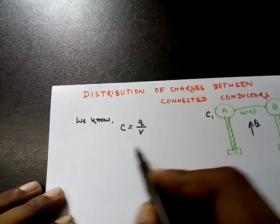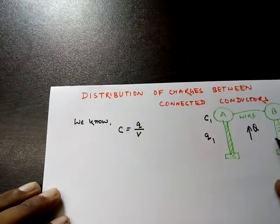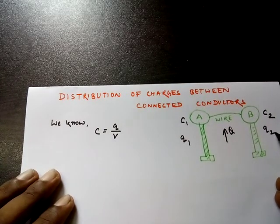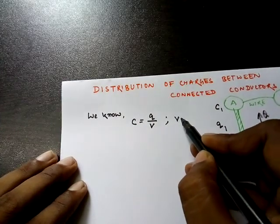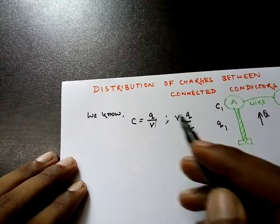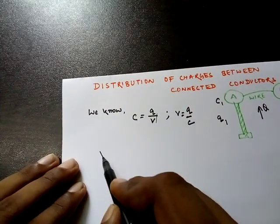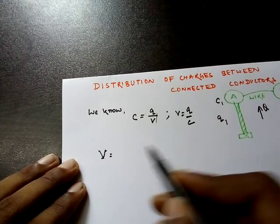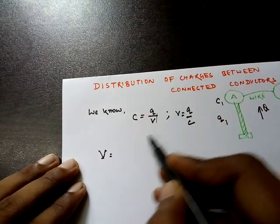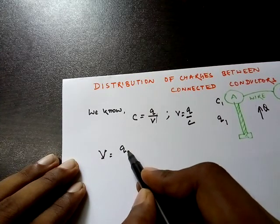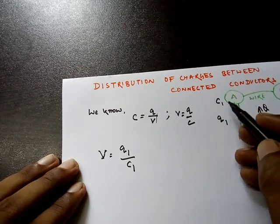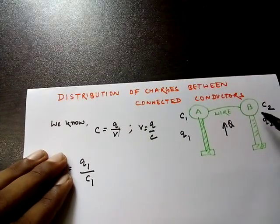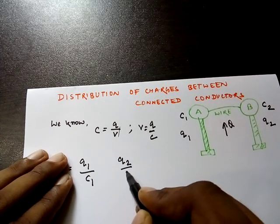If the charge received by conductor A is Q1 and the charge received by conductor B is Q2, then since V = Q/C, the common potential V equals Q1 divided by C1 for the first conductor. Similarly, for the second conductor, the common potential V equals Q2 divided by C2.